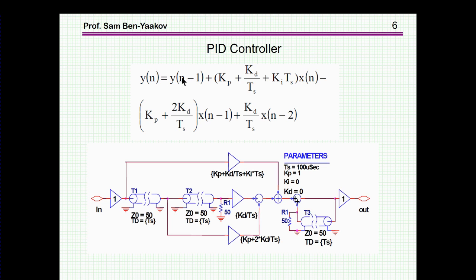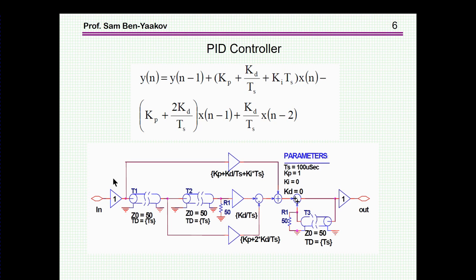The last portion adds the delayed value of Y — the output — to the whole thing. Y goes through a buffer, giving the current output, and the delayed output is added at the summing point to whatever was computed from the input terms. This is how we get an average circuit representing the digital PID, with delays built by delay lines.